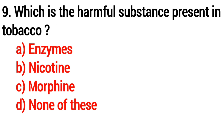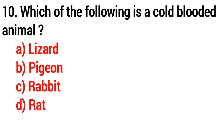Question number nine: which is the harmful substance present in tobacco? Question number nine: which of the following is a cold-blooded animal? Answer: option A, lizard.